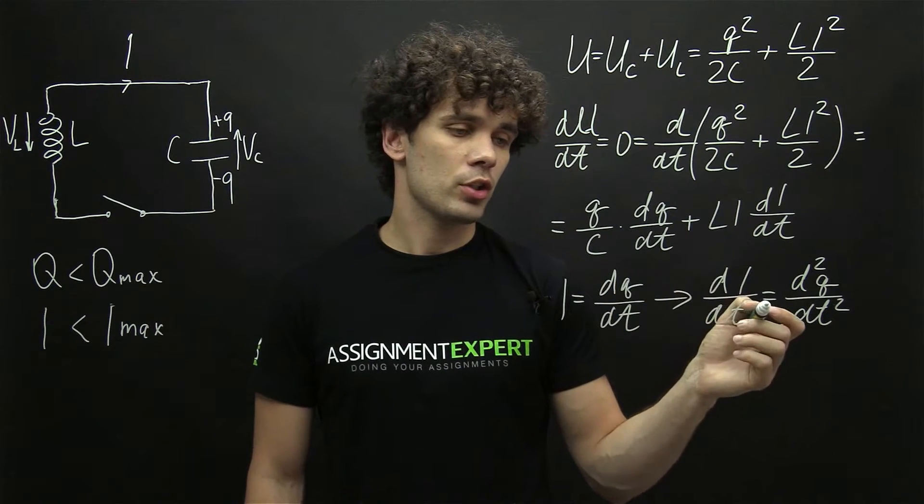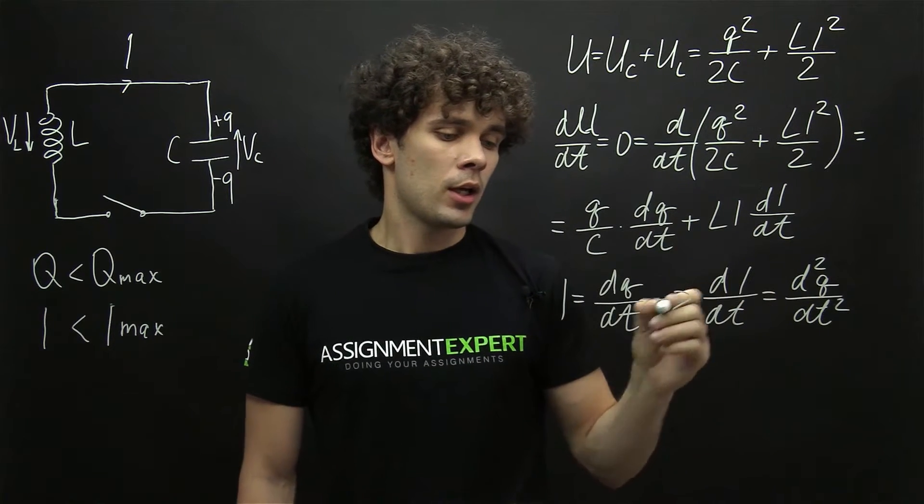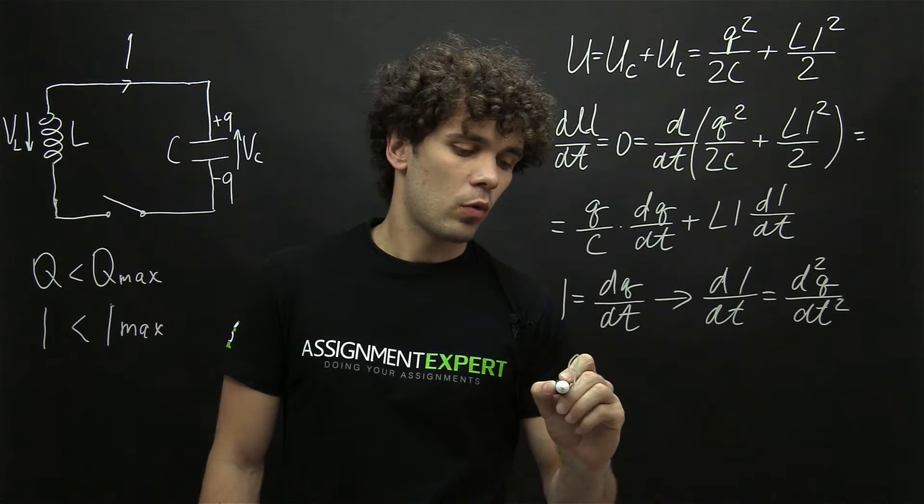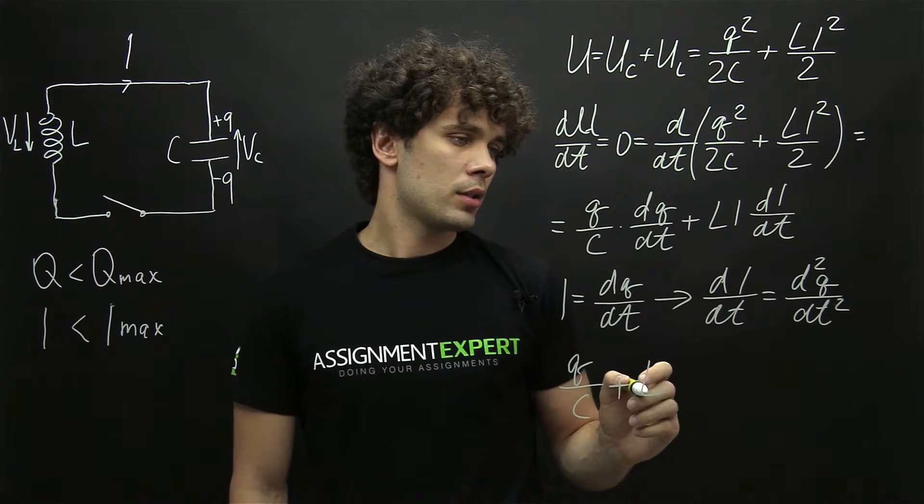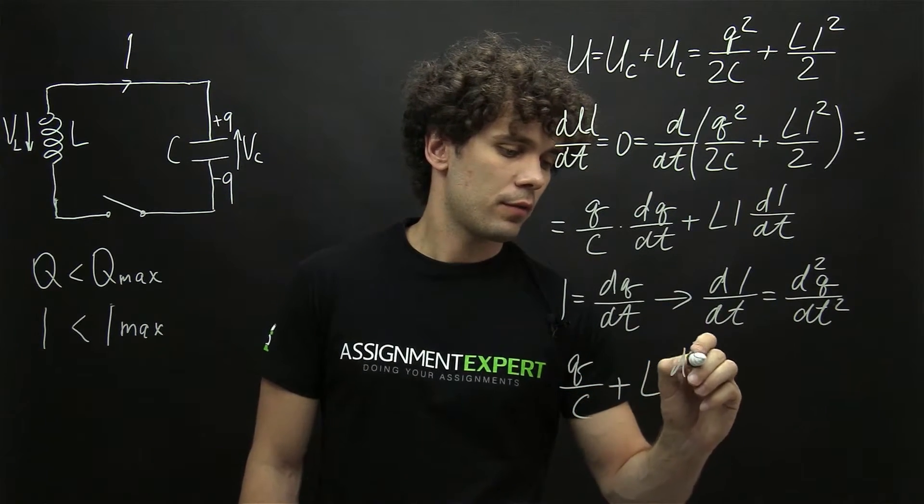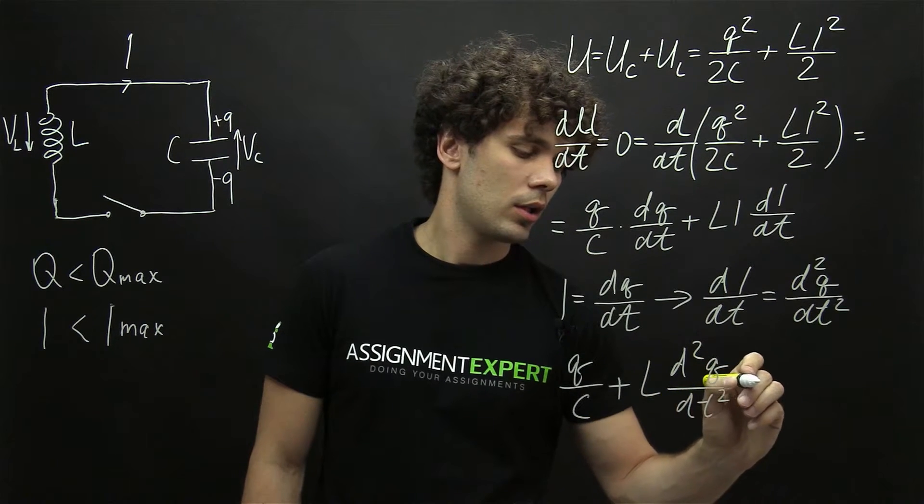So knowing these two expressions we can substitute them to reduce our formula. And we get Q over C plus L times second derivative of charge by time equals zero.